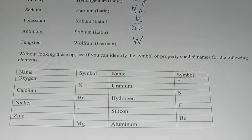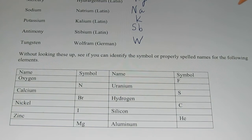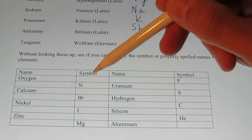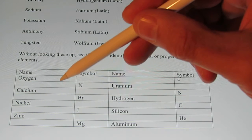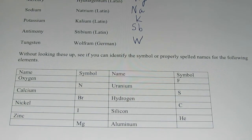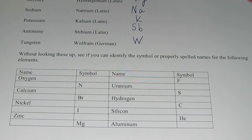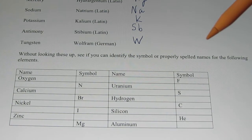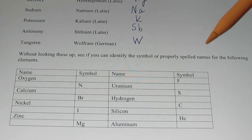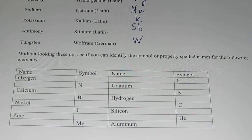Take a look at this chart at the bottom of page 8 of your manual and see without my help if you could figure out the symbol, if the symbol's missing, or the properly spelled name for the elements that I've given you here. You might surprise yourself as to how many you actually already know. So take a minute and do this. Might want to pause the video just for a moment.